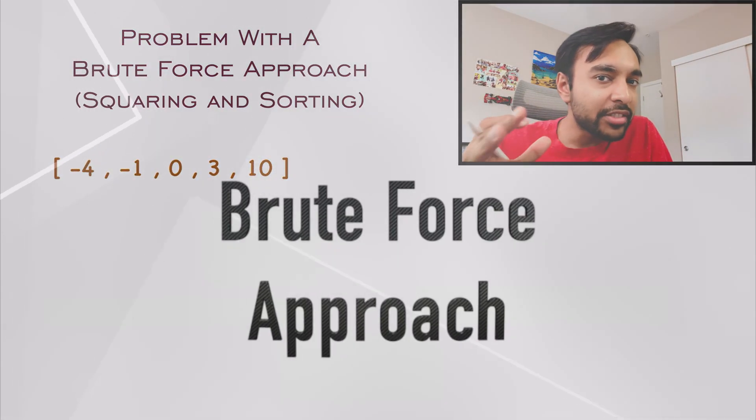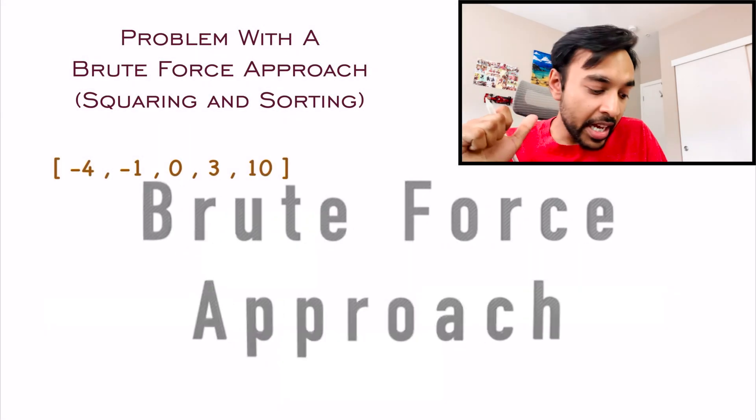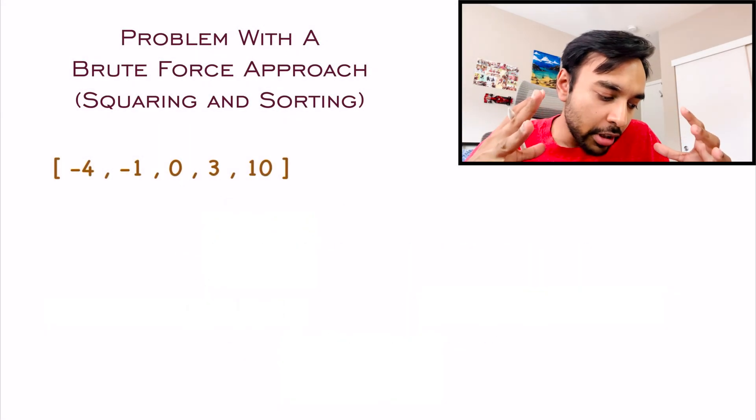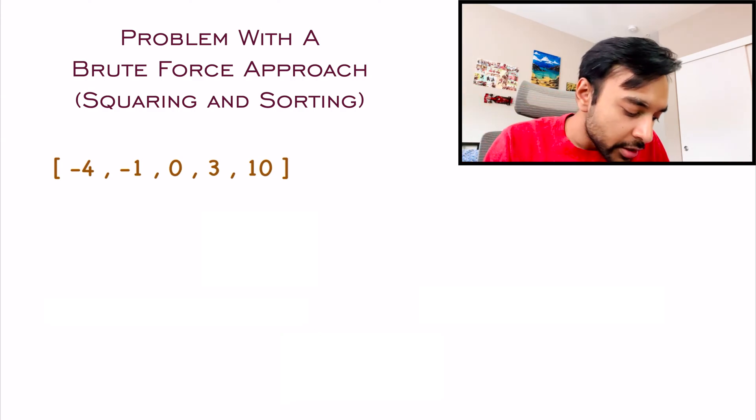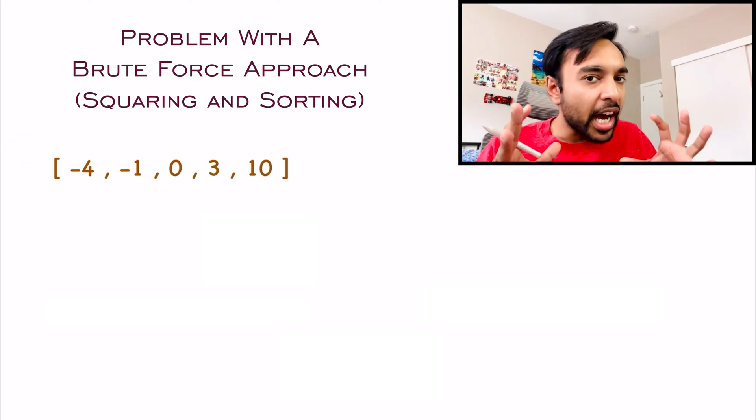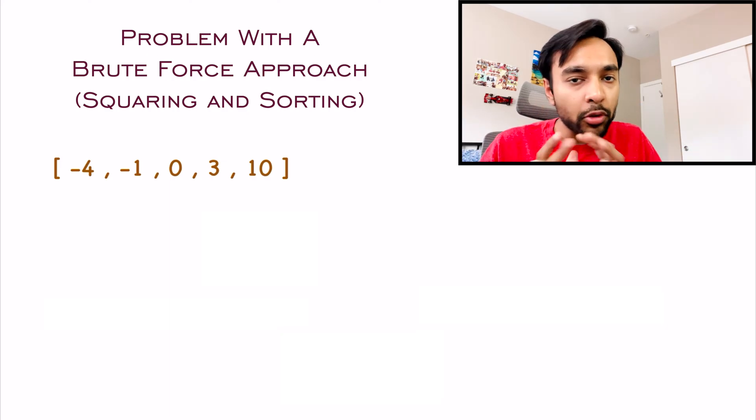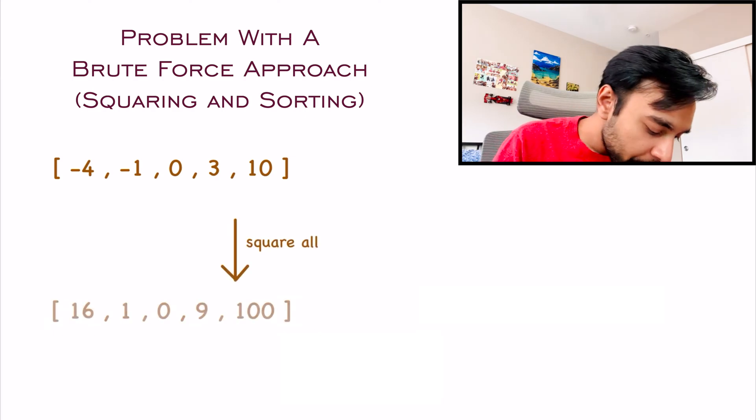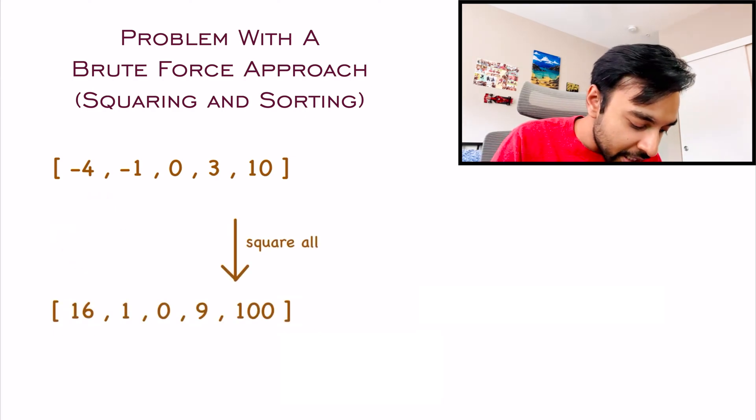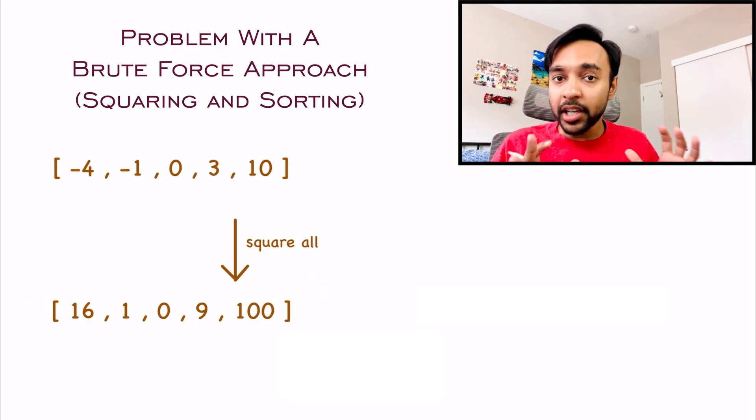A good developer always tries to come up with a brute force solution first. That is because a brute force solution guarantees you if a solution to a problem exists. So given this array, what is the most naive or the brute force way to approach this problem? You need to find the squares, right? So, in the first step, what I am just going to do is, I will square each of the elements, and then I get this resultant array.